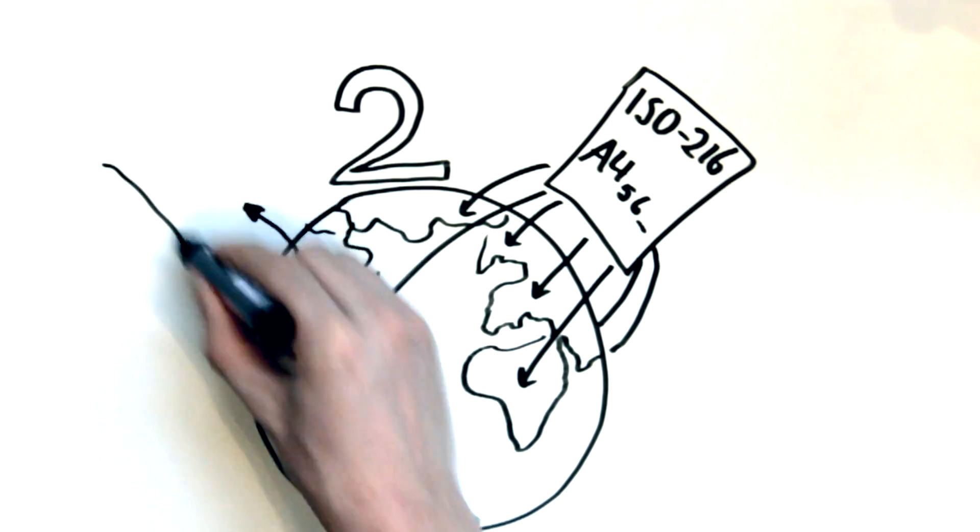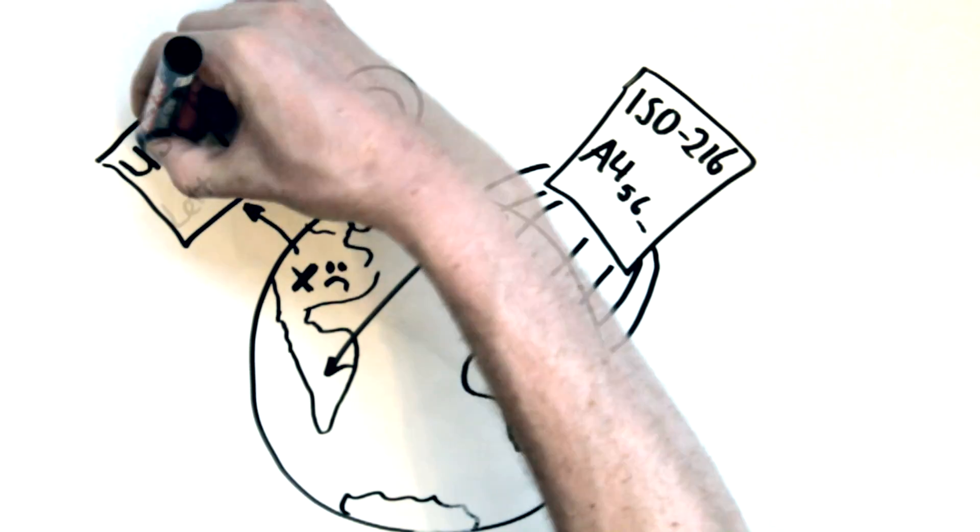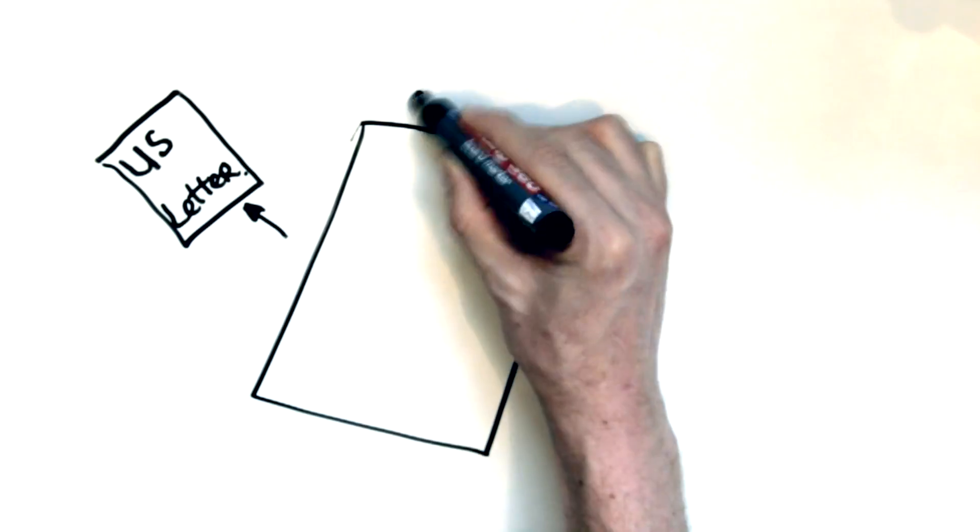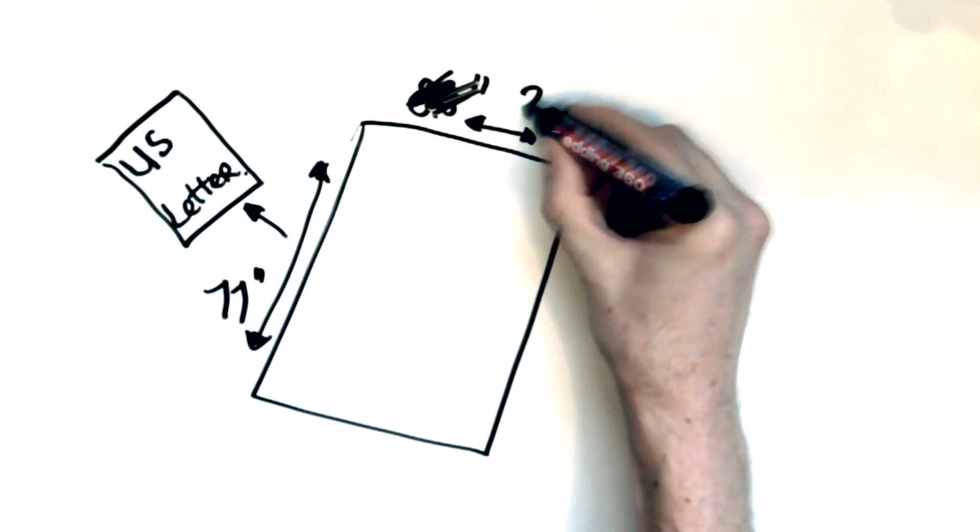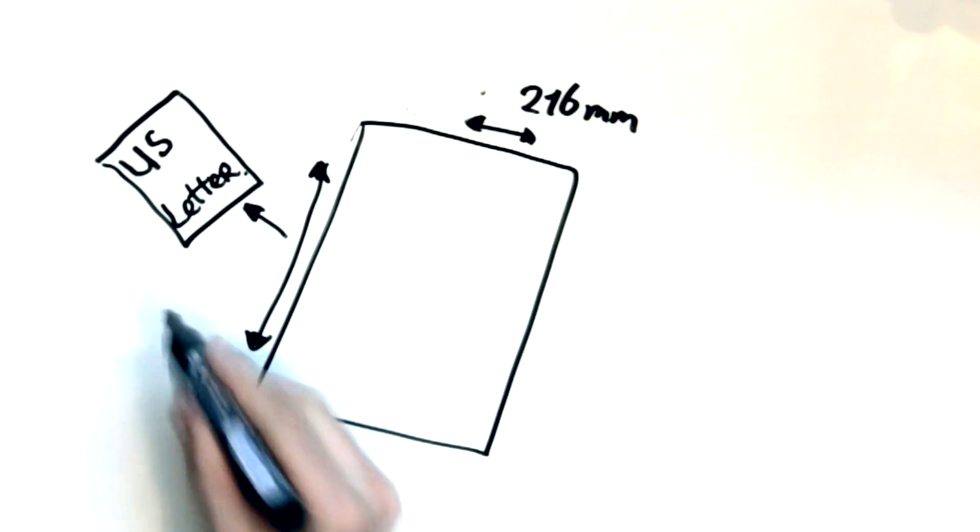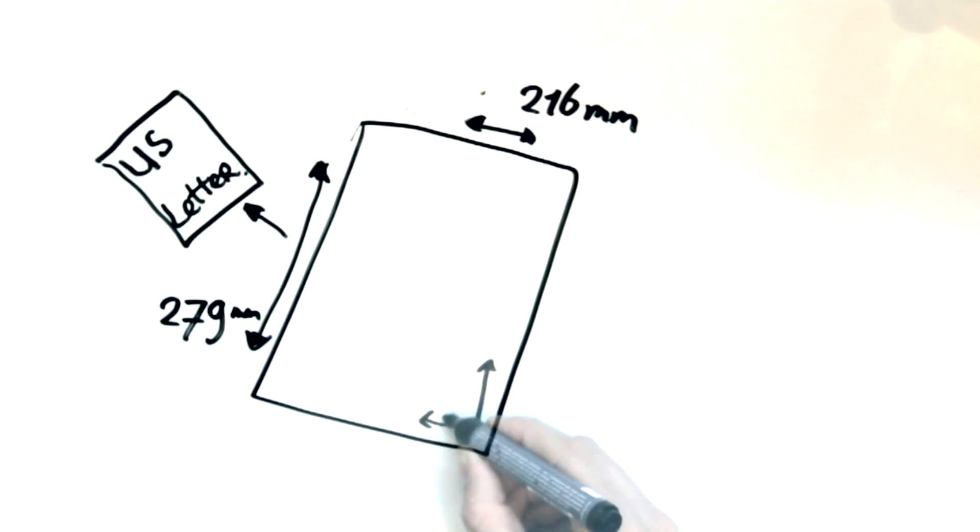They as usual have their own standard, US Letter. A standard US Letter has a size of 8.5 by 11 inches or 216 by 279 millimeters. It has an aspect ratio of 1.291.